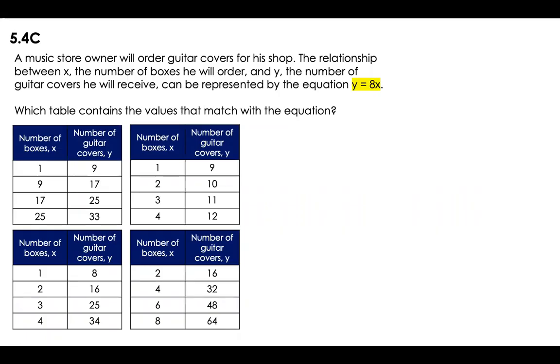A music store owner will order guitar covers for his shop. The relationship between x, the number of boxes he will order, and y, the number of guitar covers he will receive, can be represented by the equation y equals 8 times x. Which table contains the values that match with the equation? I have only one lab here. It's going to be apply the equation to each value in the tables.